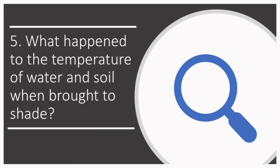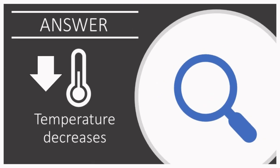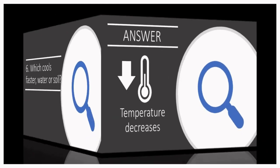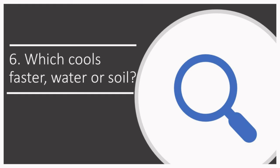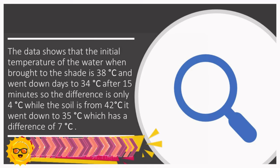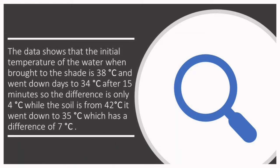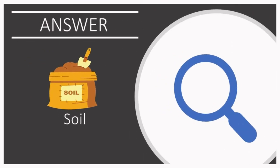What happened to the temperature of water and soil when brought to the shade? Bringing them to the shade makes their temperature decrease. The data shows the water went from 38 down to 34 degrees Celsius after 15 minutes — a difference of only 4 degrees Celsius. While the soil went from 42 down to 35 degrees Celsius — a difference of 7 degrees Celsius. This means that the soil cools faster than the water.